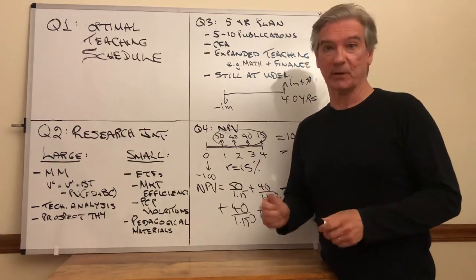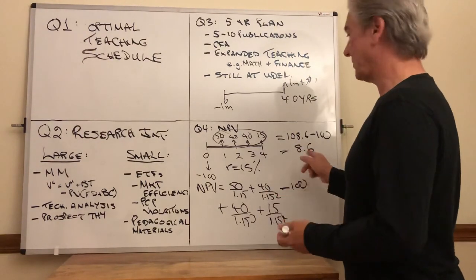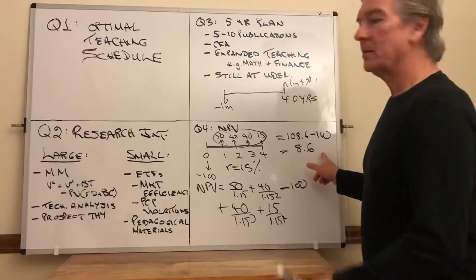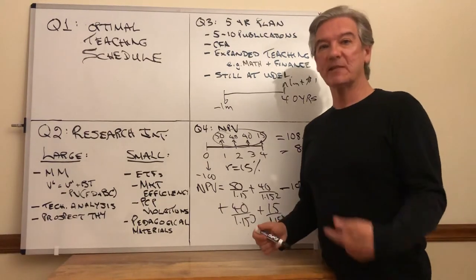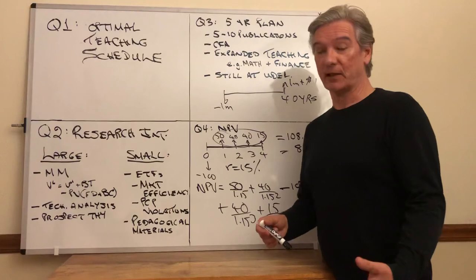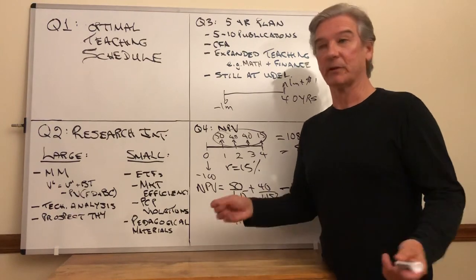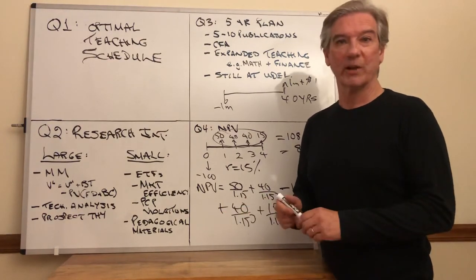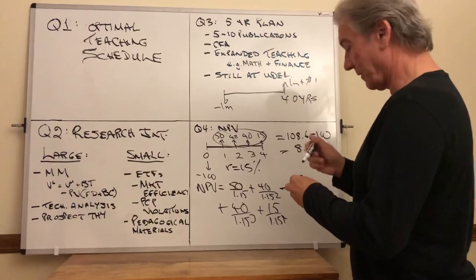Whatever, maybe it's million, maybe it's billion, maybe it's just dollars, maybe it's just 8.6 dollars. The fact that it's greater than zero means that you have added value to whatever. What is it most likely? You have added value to the firm.